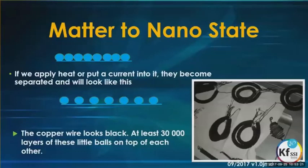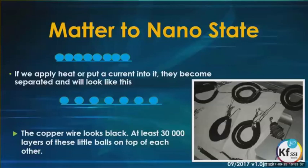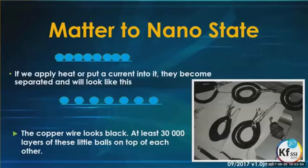When we go from the meta to the nano-state, if we apply heat through a caustic environment or put a current into it, the atoms become separated and find their position — moving further away from each other, still connected but now further apart. The copper wire then looks black, but we have at least 30,000 layers of these little balls on top of each other. That's our nano-layer, and it's black because it absorbs the full light spectrum.